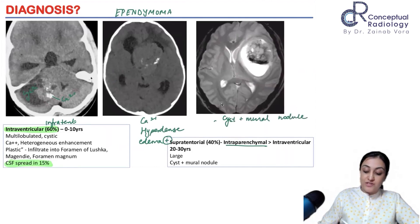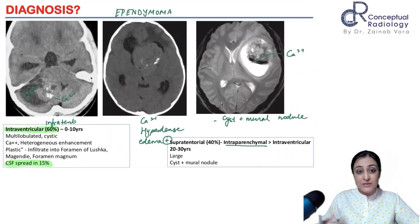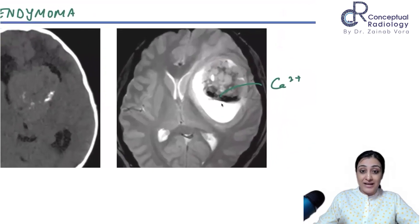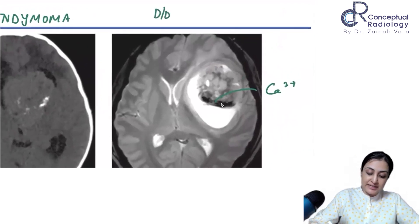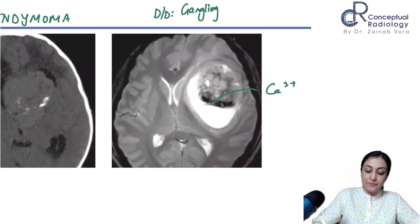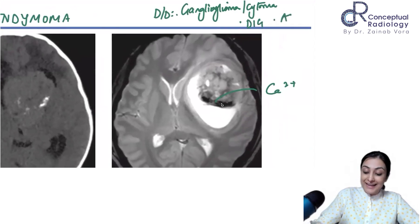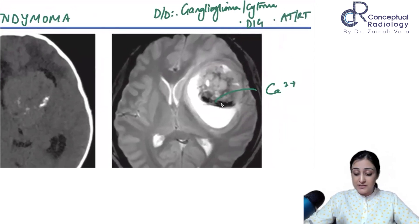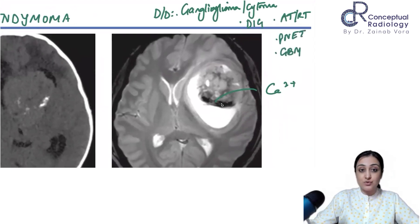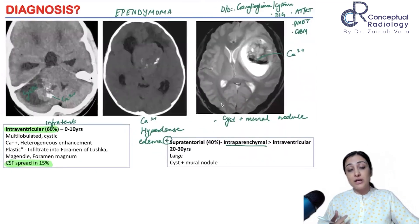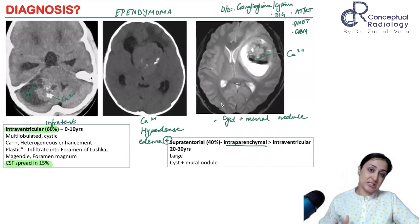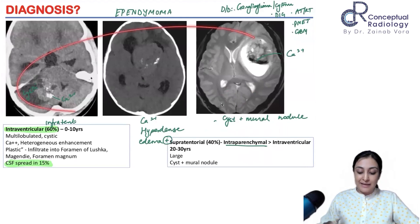The differentials for such a lesion in a young child include ganglioglioma and gangliocytoma if there is calcification, and in an infant you would also consider DIGT, ATRT — which can mimic this — and supratentorial PNET. In a young adult, glioblastoma and anaplastic astrocytoma become differentials for a supratentorial aggressive mass.